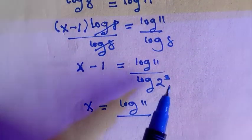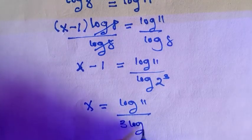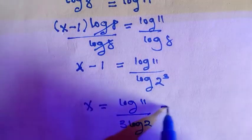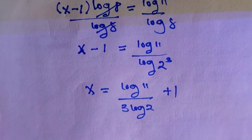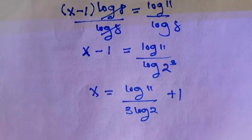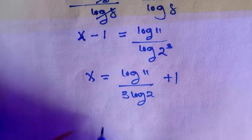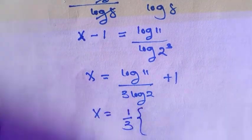So if you apply this power law, then it comes down. Then we have 3 log 2, and plus 1. Then we are going to take out 1 divided by 3. So the 1 at the quotient of log 11 and the 3 at the quotient of log 2. We are going to have 1 divided by 3, a bracket of log 11 divided by log 2 plus 1.